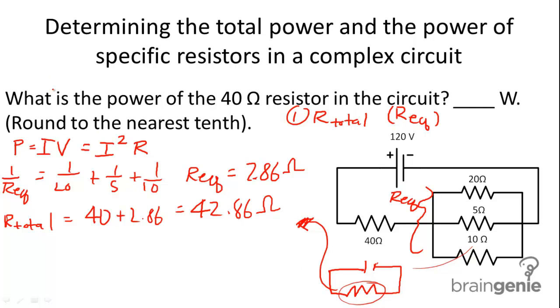we can figure out the current flowing through that circuit using V equals IR. We'll use 120 for V is equal to I times 42.86. And we'll find I to be 2.80 amps.